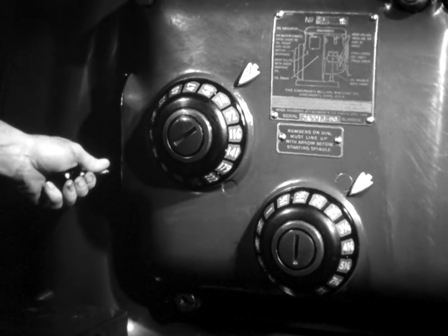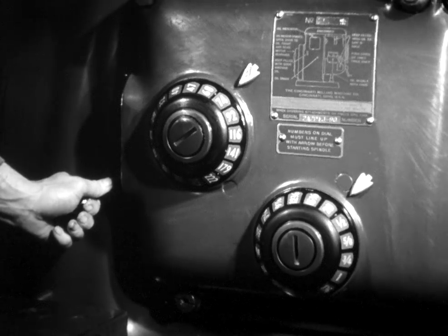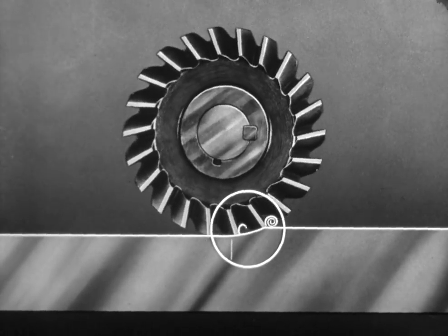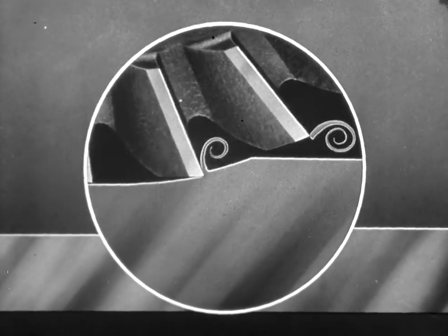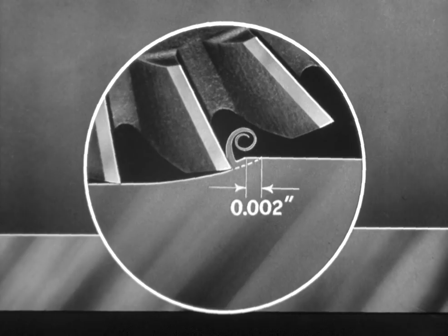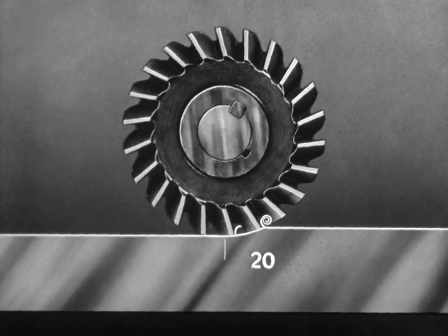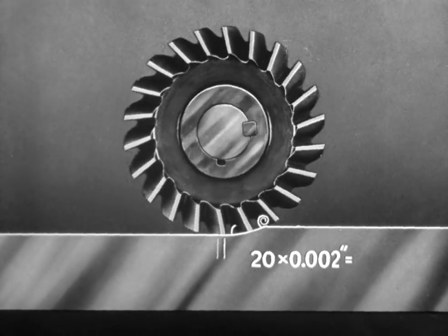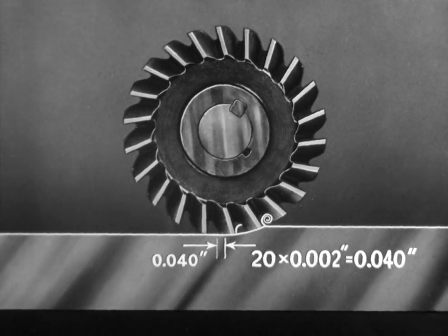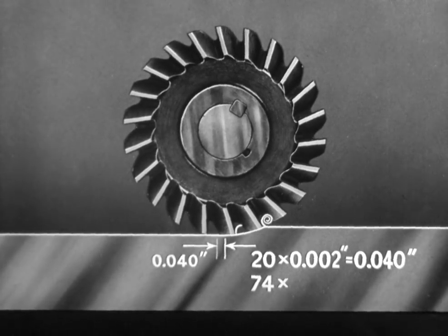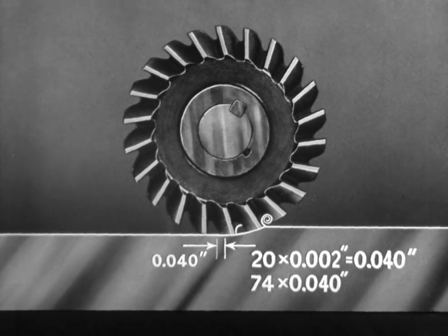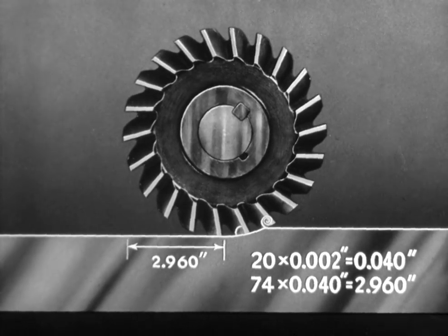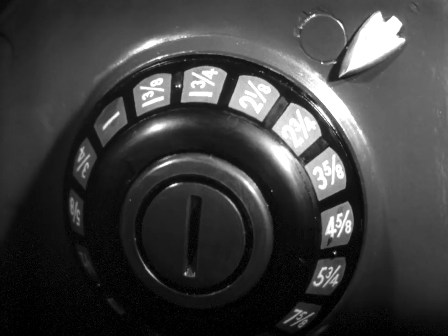Next, the operator must determine the proper feed. Feed is the number of inches per minute that the work is fed to the cutter. For the three-sixteenths cut, each tooth should remove a very small amount of metal. In this case, we will use a conservative chip thickness, or cut per tooth, of two-thousandths. The number of teeth, twenty, times the selected chip thickness, two-thousandths, equals forty-thousandths, the distance that the work moves into the cutter in one revolution. The speed of the cutter, seventy-four RPM, times forty-thousandths, equals the distance the cutter will move into the work per minute, which is nearly three inches. The nearest feed is two and three-quarters, so the operator sets the dial at that point.